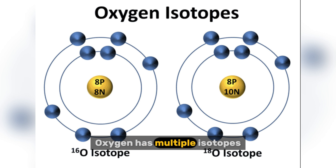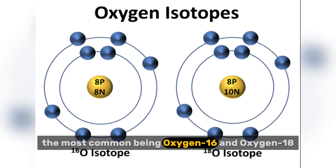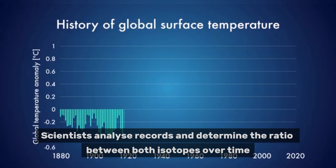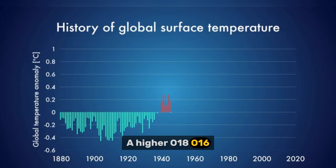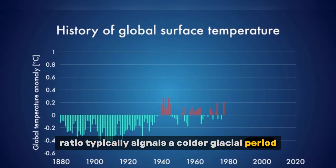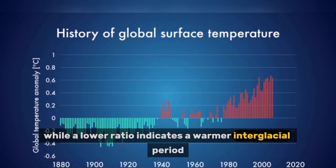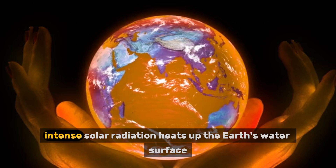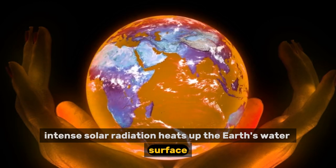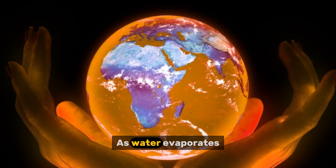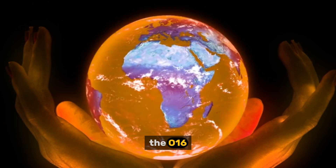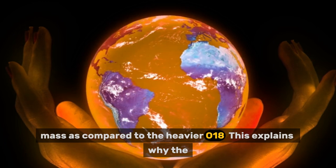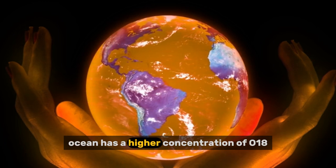Here's how it works. Oxygen has multiple isotopes, the most common being oxygen-16 and oxygen-18. Scientists analyze records and determine the ratio between both isotopes over time. A higher O18/O16 ratio typically signals a colder glacial period, while a lower ratio indicates a warmer interglacial period. At lower latitudes nearer to the equator, intense solar radiation heats up the earth's water surface, facilitating evaporation. As water evaporates, lighter oxygen isotopes — O16 — evaporate more readily due to their lower mass compared to the heavier O18. This explains why the ocean has a higher concentration of O18.